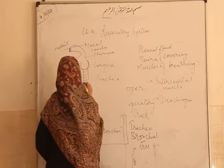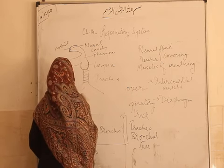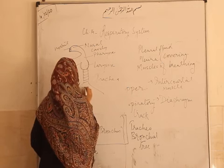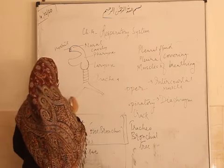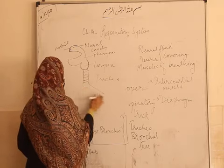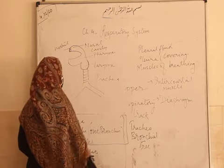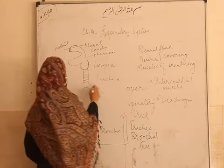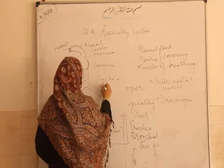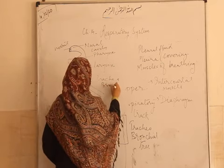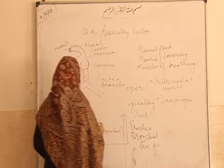Trachea divides into right and left. Right goes into the right lung and left goes into the left lung. Together they are bronchi.